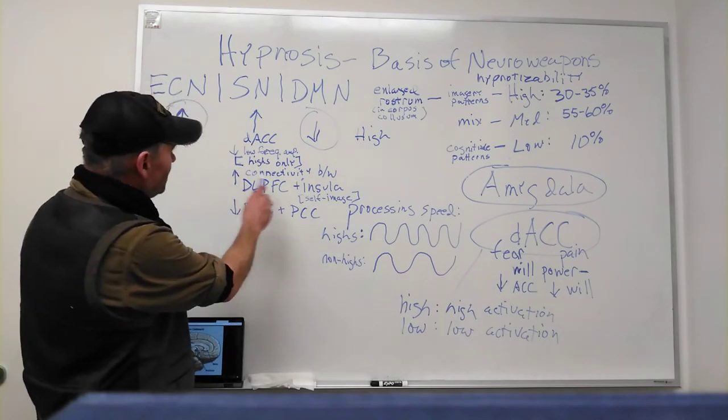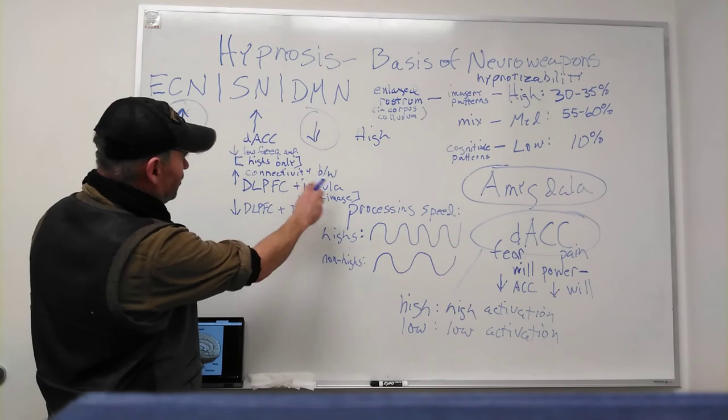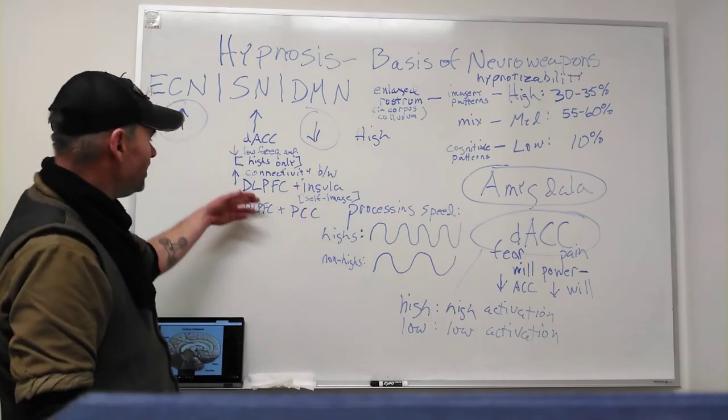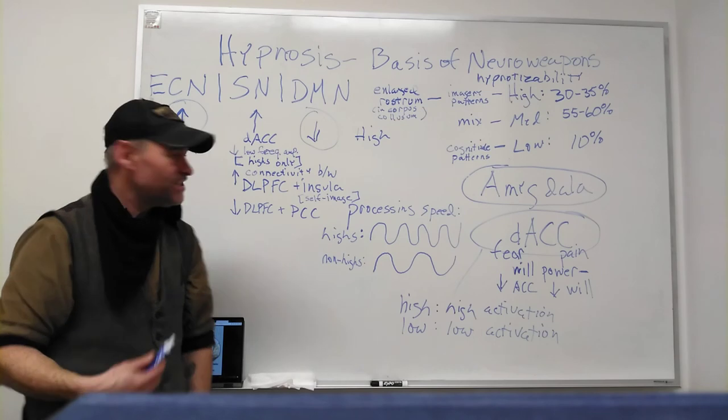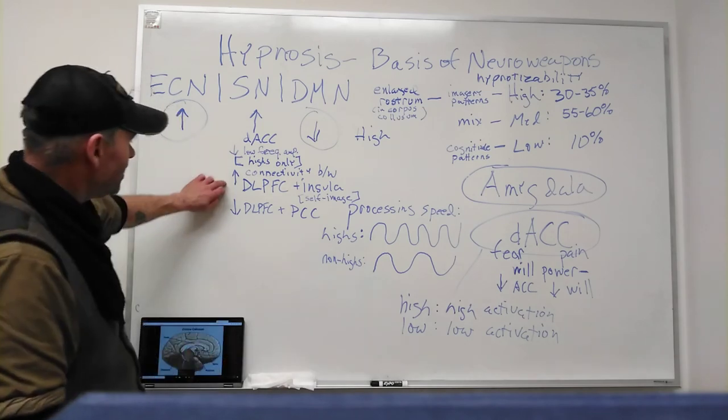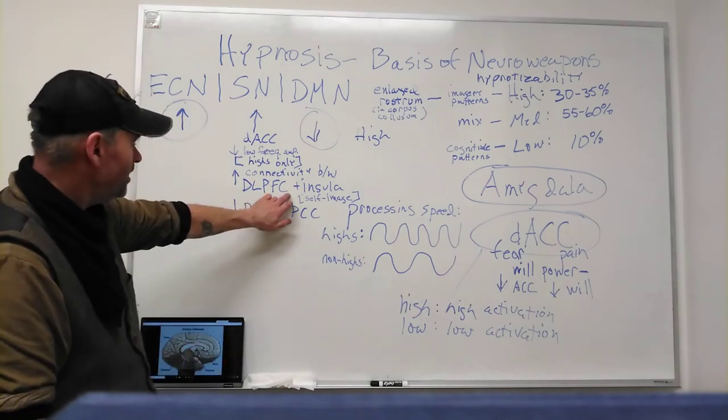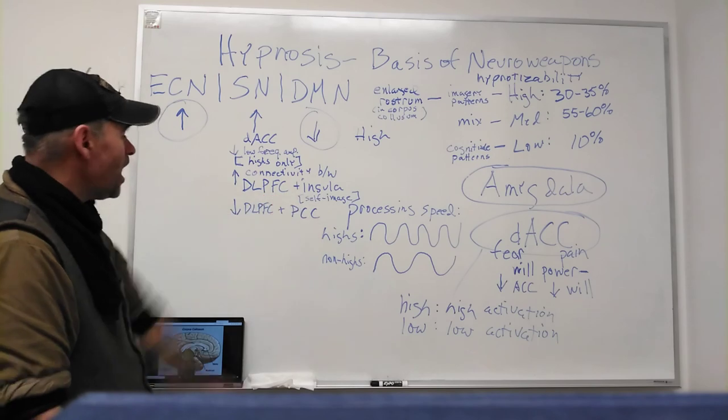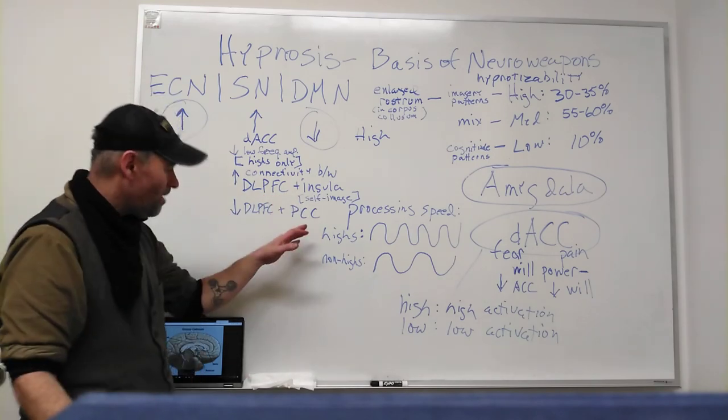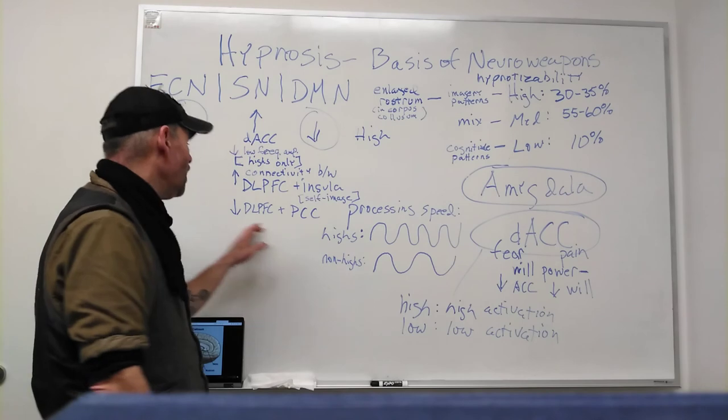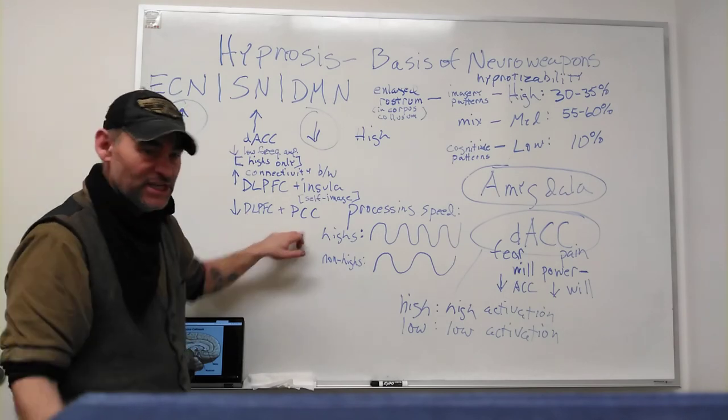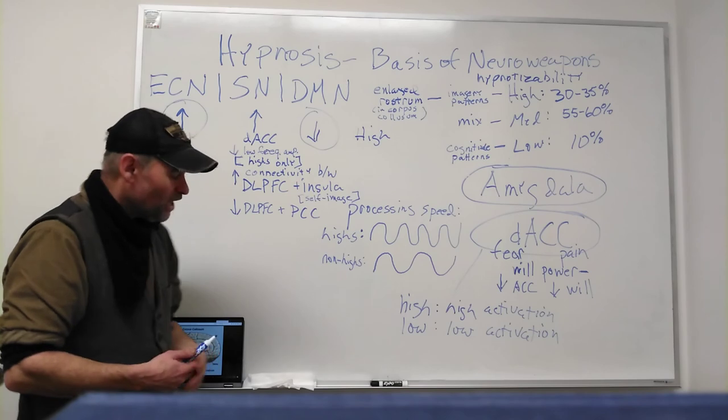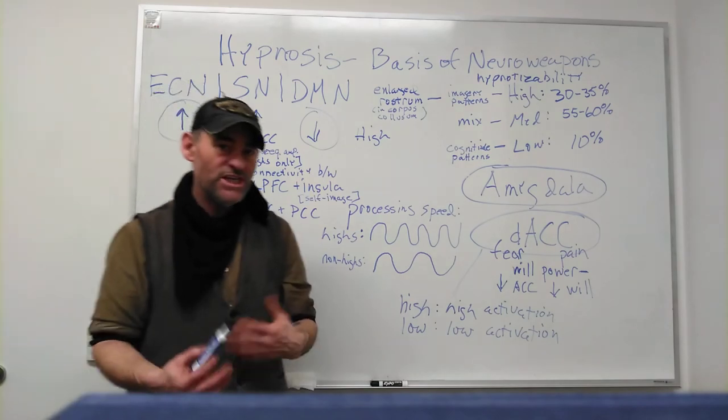Another thing that happens in highs is the connectivity between what's known as the DLPFC and the insula. The insula gives us self images. There's an increased connectivity between the DLPFC and the insula while at the same time in the prefrontal cingulate cortex, the DLPFC connectivity with the PCC goes down.